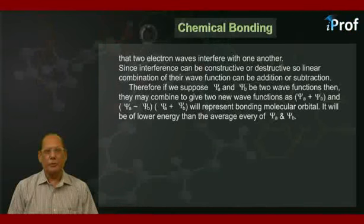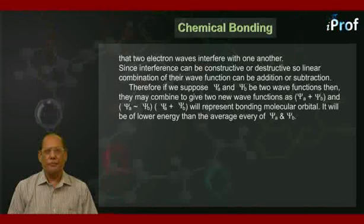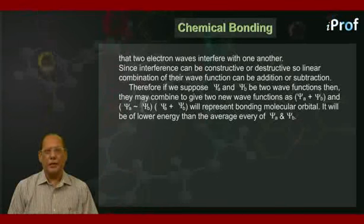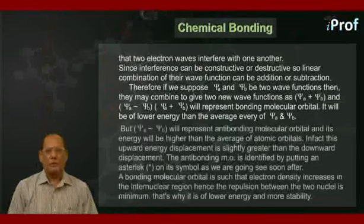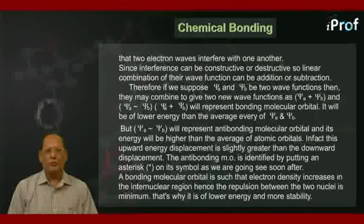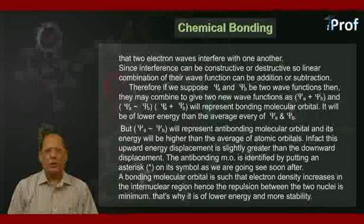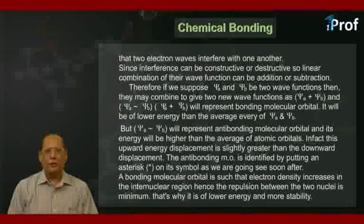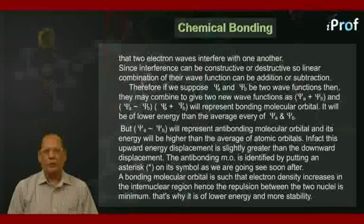Psi-A plus psi-B will represent bonding molecular orbital. It will be of lower energy than the average energy of psi-A and psi-B. But psi-A minus psi-B will represent anti-bonding molecular orbital. And its energy will be higher than the average of atomic orbitals. In fact, this upward energy displacement is slightly greater than the downward displacement. The anti-bonding molecular orbital is identified by putting an asterisk on its symbol, as we are going to see soon after.